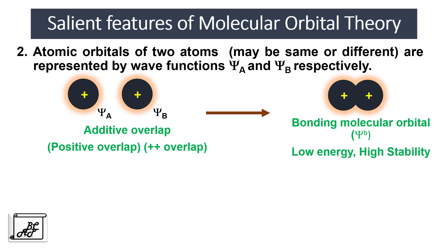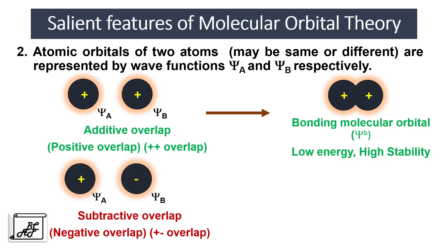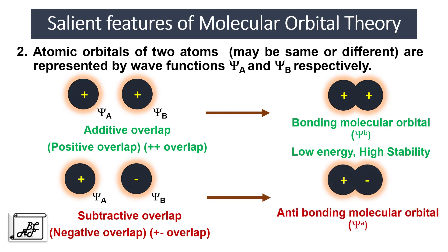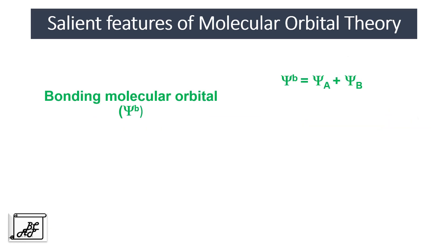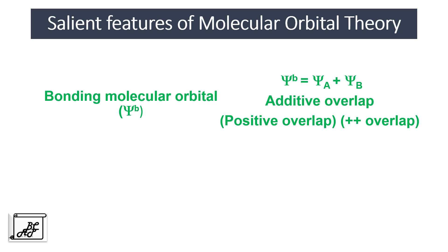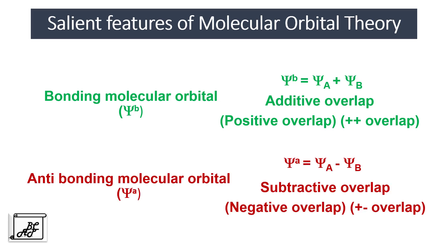The second possibility is that these atomic orbitals can combine with subtractive or negative overlap. In case of subtractive overlap, the molecular orbital formed is called an antibonding molecular orbital, abbreviated as ψ*. This molecular orbital has high energy and low stability. So the bonding molecular orbital is formed by additive overlap: ψb = ψA + ψB, and the antibonding molecular orbital is formed by subtractive overlap: ψ* = ψA − ψB.